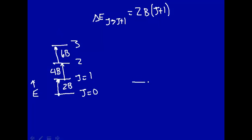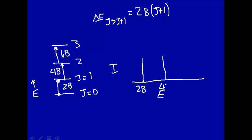Looking at what the spectrum would look like: on the intensity versus energy axis, there is an absorption line at energy 2B, another at 4B, another at 6B, and so on. So what you predict for rotational spectroscopy is a series of equally spaced lines whose separation is equal to 2B.